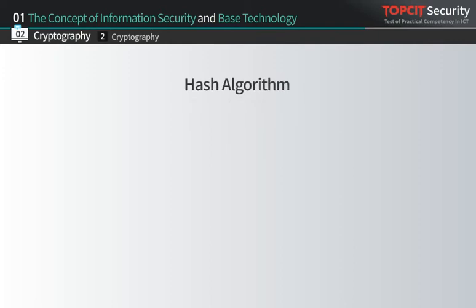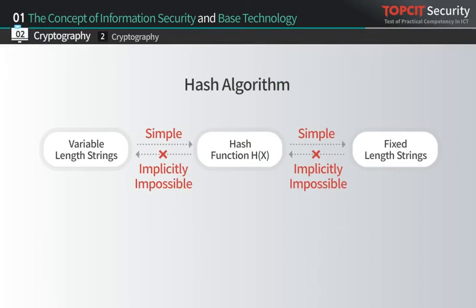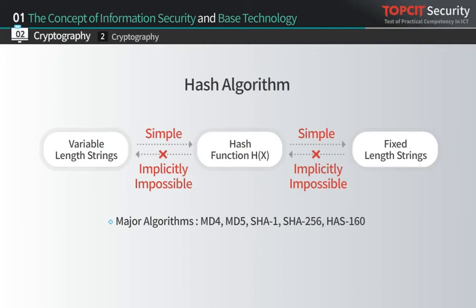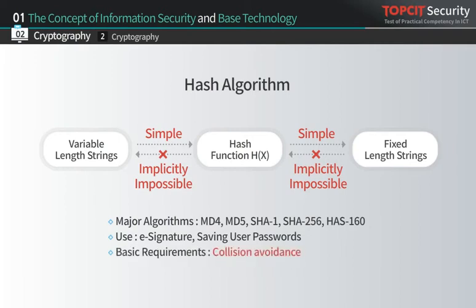Now we will look at hash algorithms. Hash algorithms convert variable-length strings into fixed-length strings, which is why they are also called one-way cryptography. Some examples are MD4, MD5, SHA-1, SHA-256, and HAS-160, which is developed in Korea. This algorithm is mainly used for e-signatures or when saving a user's password in a database. When different strings convert into identical strings, we call this phenomenon hash collision, and attacks can occur using this collision.